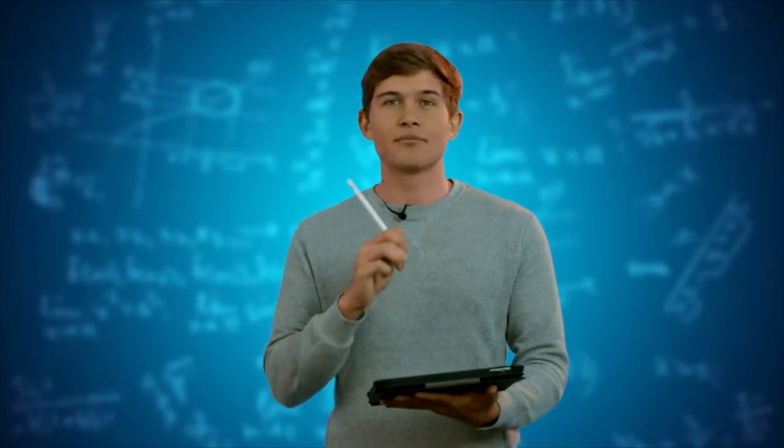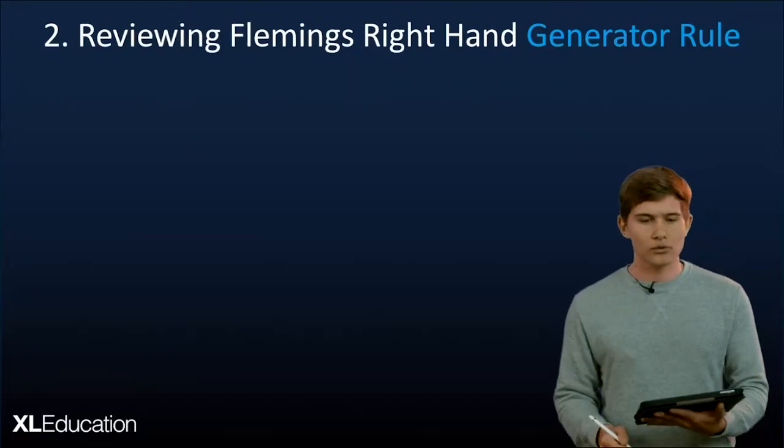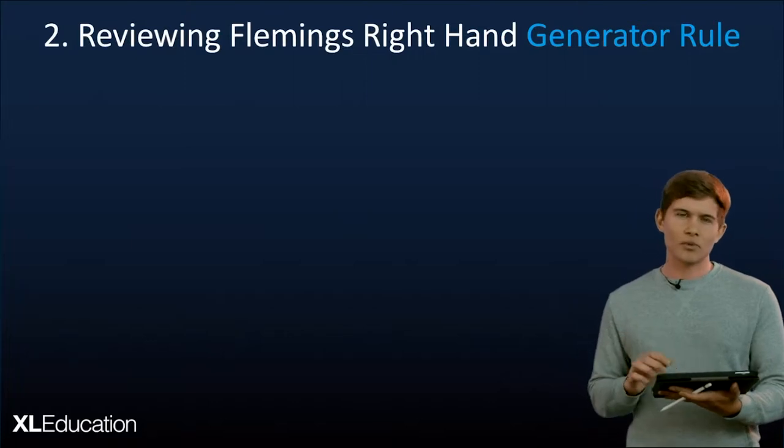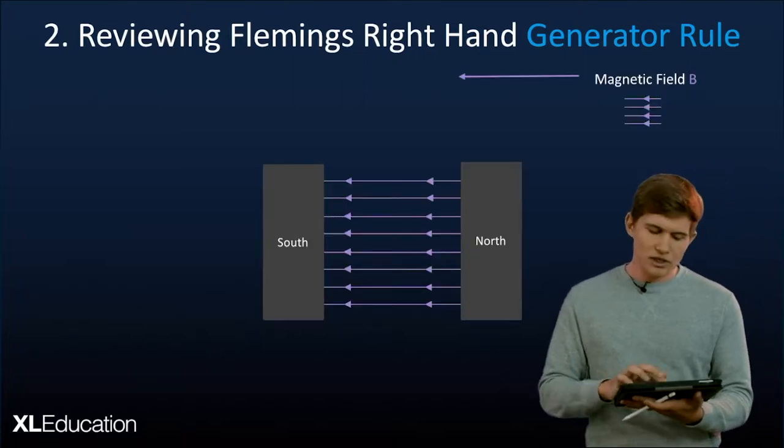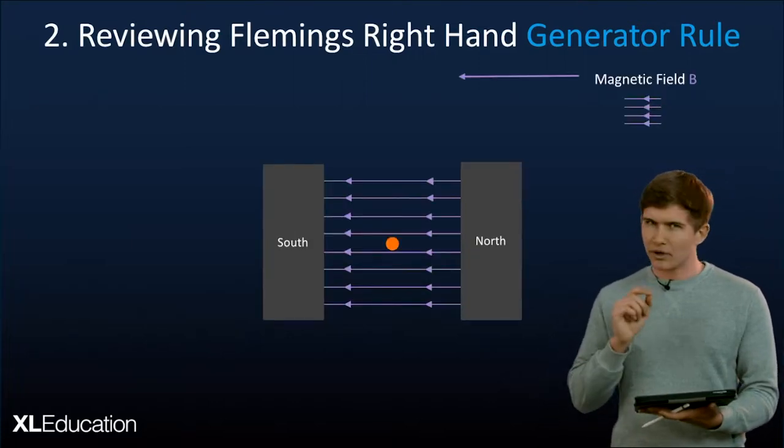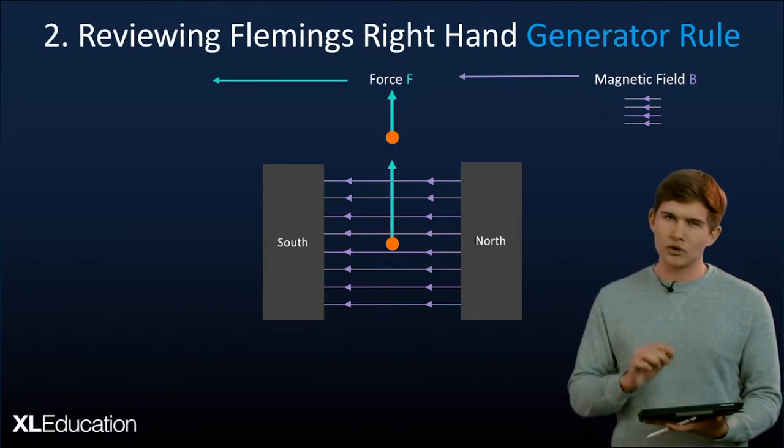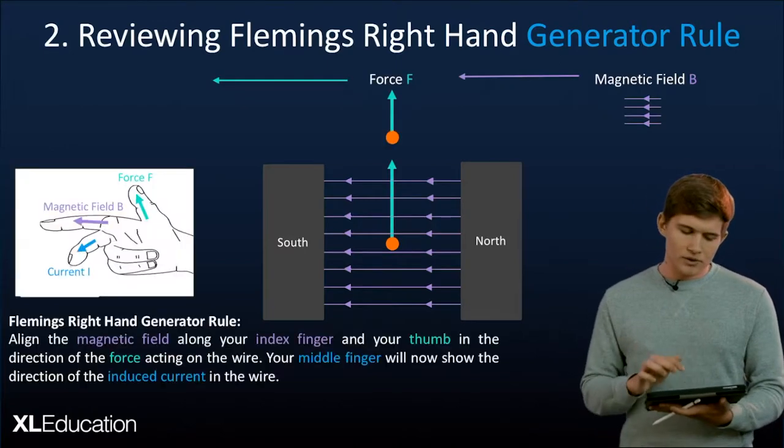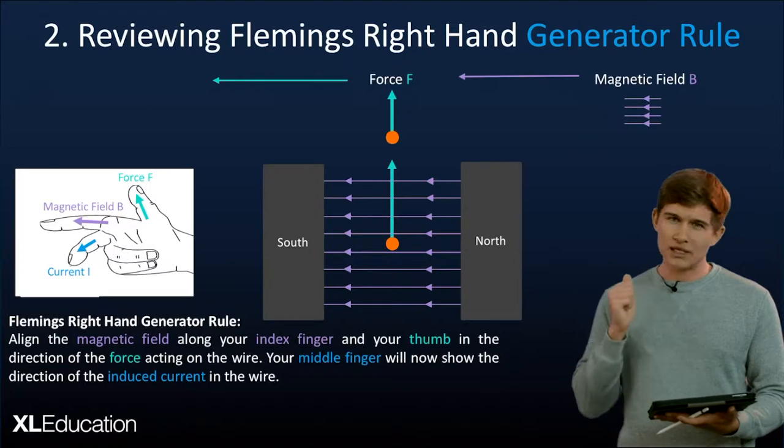So again generators take mechanical energy and create electrical energy which is the opposite to what motors do that take electrical energy to create mechanical energy. Okay so let's see how Fleming's right-hand generator rule can help us with that. In this case we need to remember that we need a magnetic field and we also need a current carrying wire but we don't have any current yet because we want to induce that using a force and to induce a current we have to use his right-hand rule.